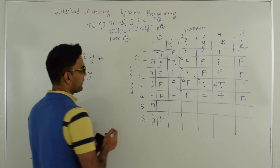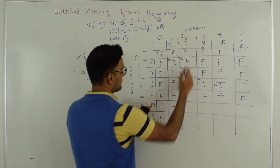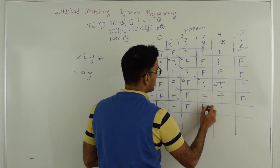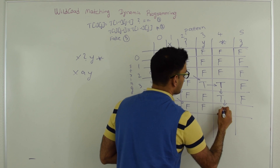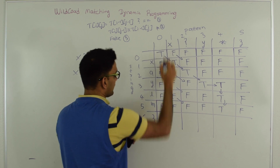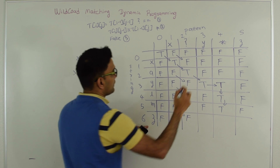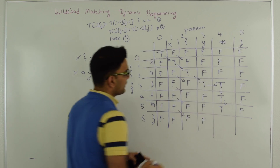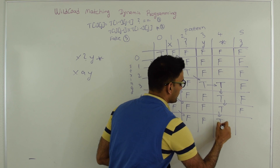Let's fill the remaining two rows quickly. X and M are not same — false. Question mark at T[5][2]: take diagonal value which is false. M and Y are not same — false. For the star at T[5][4], we take the value from the top which is true, so T[5][4] is true. M and Z are not same — false. Z and X are not same — false. Question mark at T[6][2]: diagonal value is false. Y and Z are not same — false. For the star at T[6][4]: top is true, so T[6][4] is true.